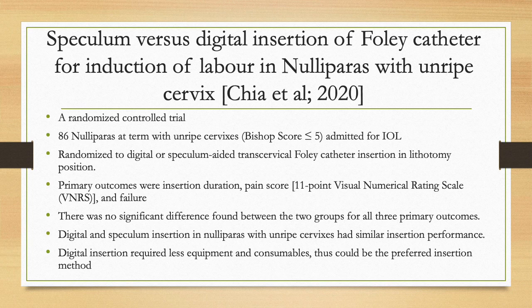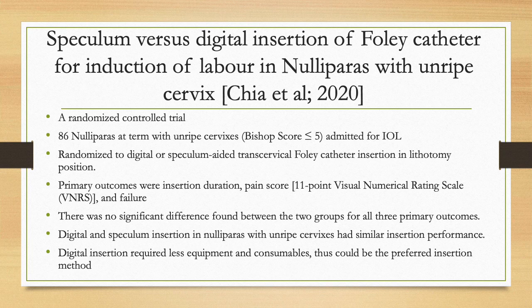Chia et al. looked at speculum versus digital insertion of Foley catheter for induction of labour in nulliparous women with unripe cervices. This randomised control trial included 86 nulliparous women at term with a Bishop's score of five or less, admitted for induction of labour and randomised to digital or speculum-aided transcervical Foley catheter insertion in lithotomy position. Primary outcomes were insertion duration, pain score, and failure rate. No significant difference was found between the two groups for all three outcomes, suggesting digital insertion — which requires less equipment — could be the preferred method.